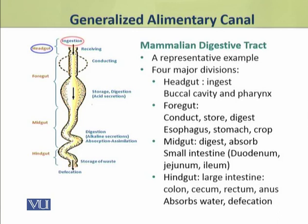The second division of the alimentary canal is the foregut. It has specialized regions to conduct, store, and partially digest the food. It includes the esophagus for conduction and the stomach for storage. In some animals, the crop is also used for temporary storage of food, while the stomach stores food as well as partially digests it.